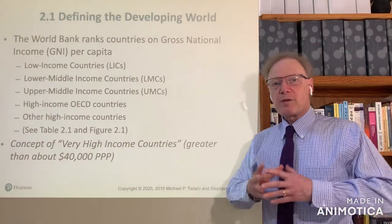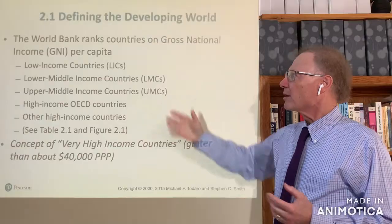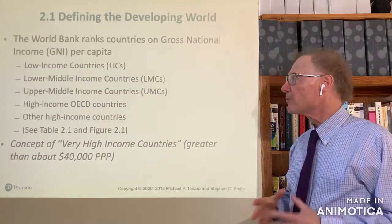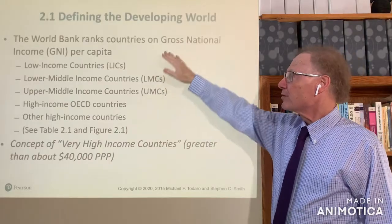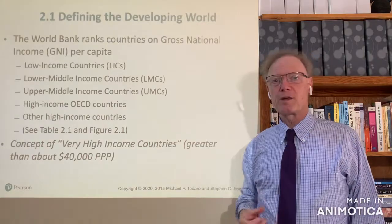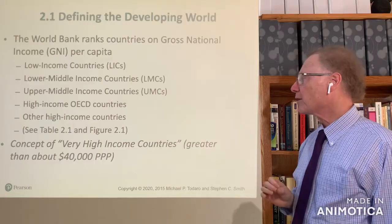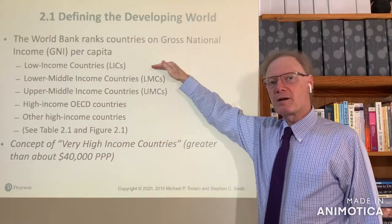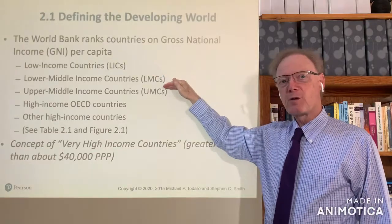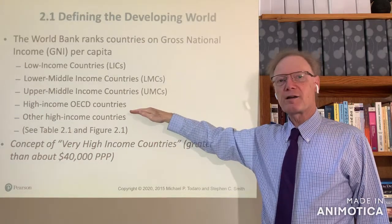We begin with how the developing world is defined in terms of income per capita. The World Bank's framework is the standard one most widely used. The World Bank ranks countries based upon their gross national income per capita — income being the standard of living indicator — and using income thresholds they define low-income countries, lower-middle-income countries, upper-middle-income countries, and two kinds of high-income countries.